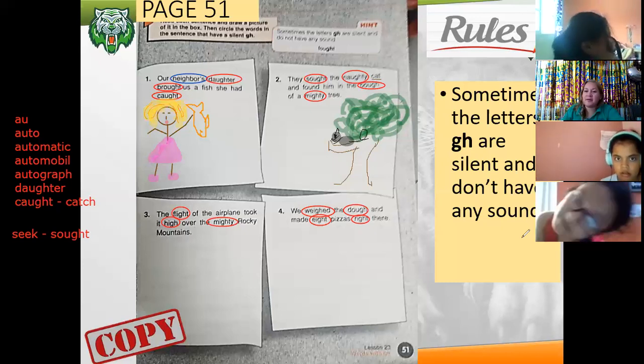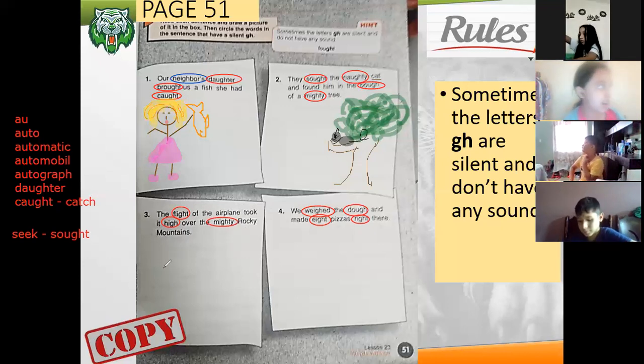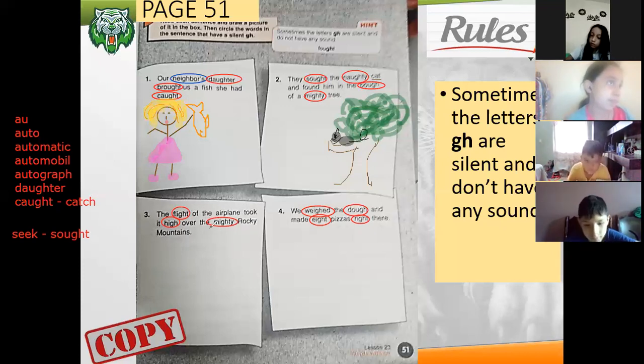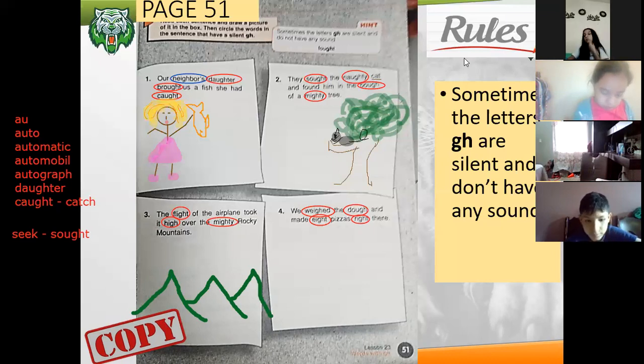The next one, number three: the flight of the airplane took it high over the mighty Rocky Mountains. The flight, this is el vuelo, of the airplane took it high over the mighty Rocky Mountains. So let's draw the mountain and an airplane flying over the mountains, because the Rocky Mountains is one of the largest mountain chains in the United States.